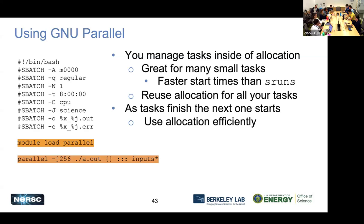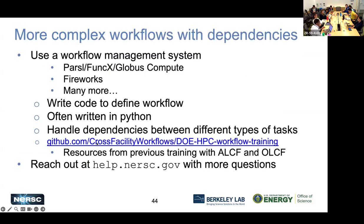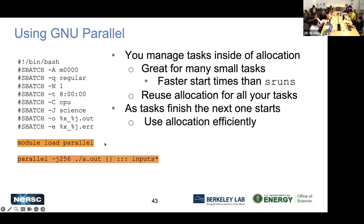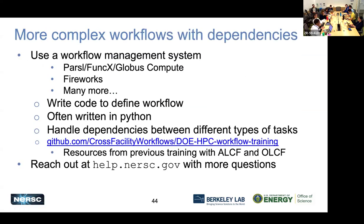Another way to manage tasks is using GNU parallel, which is great for small tasks. It has a faster start time than srun, you can reuse allocation for all tasks, and as each task finishes, the next one starts — providing an efficient way to use your allocation. To use GNU parallel, add module load parallel in your sbatch script, then use parallel instead of srun with the appropriate flags and inputs.